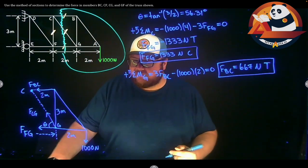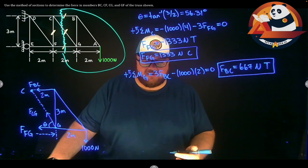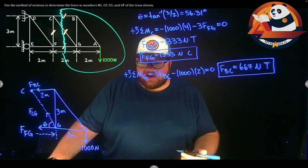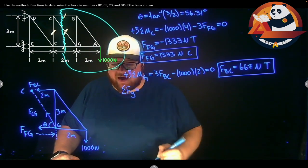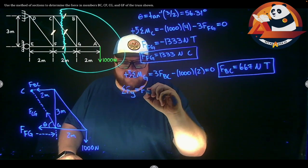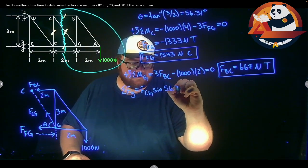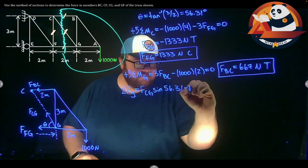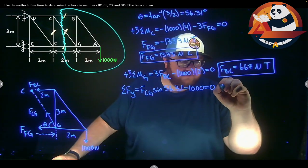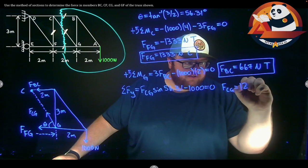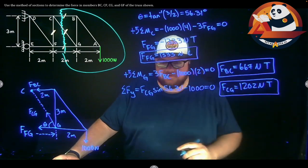With those two done, I am at the point that I can sum forces. I could have started by summing forces in the Y. I only have FCG in the Y direction. Summing forces in the Y, we would have FCG goes up. So FCG times the sine of theta, 56.31, minus 1,000, is going to get us to 0. Solving for FCG, I'm going to get the force in member CG is 1,202 newtons. I get a positive there, so it's also in tension.